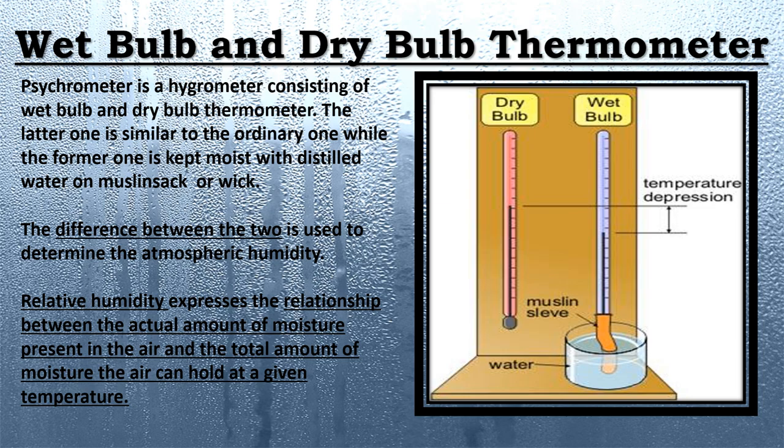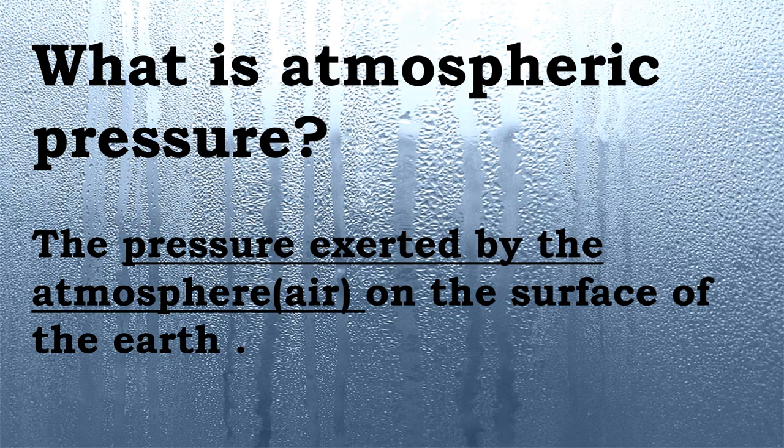Now let's see how atmospheric pressure works. The air around you has weight, as we all know, and it presses against everything it touches. That pressure is called atmospheric pressure, or it is also called air pressure. In other words, it is the pressure exerted by the atmosphere on the surface of the earth, and gravity pulls it down to the earth.